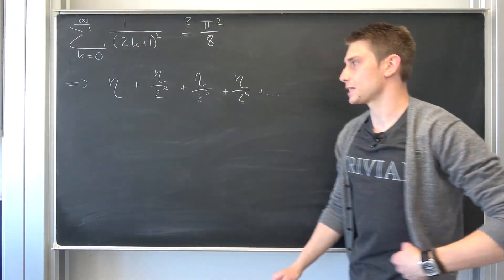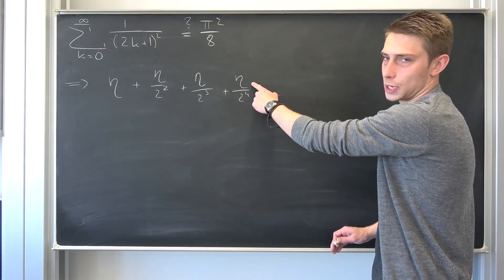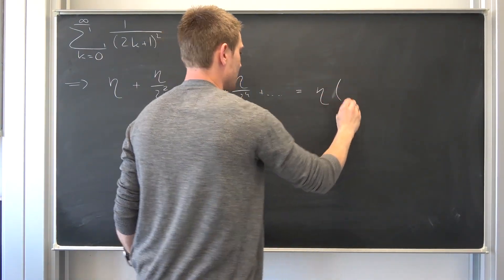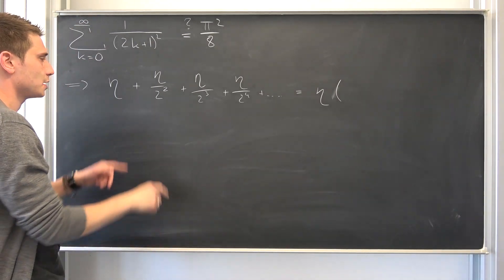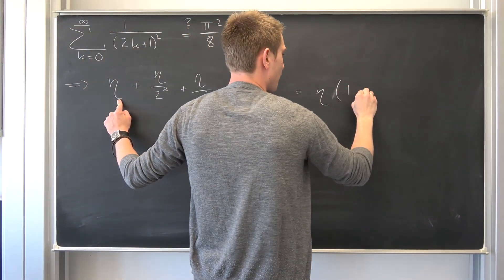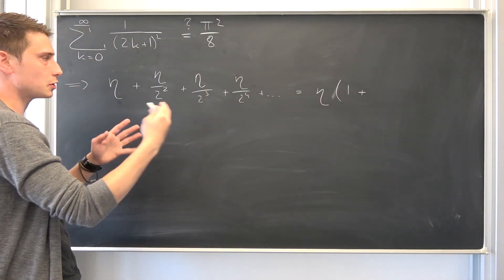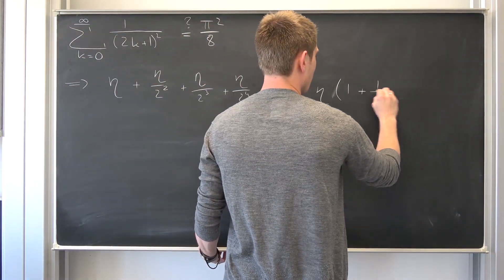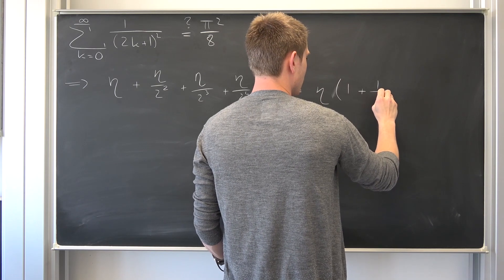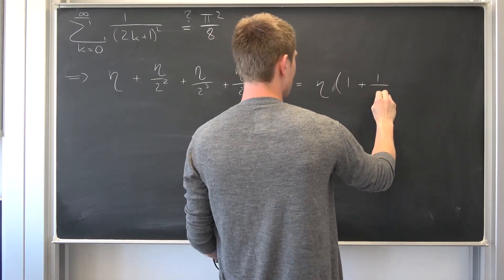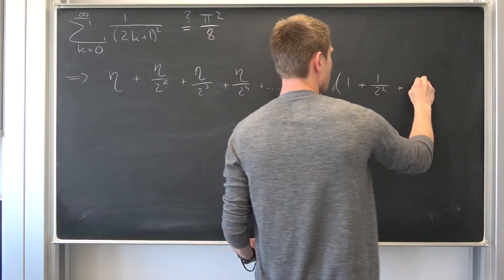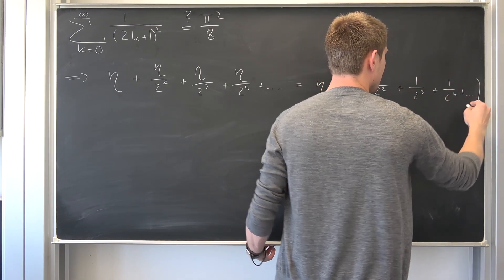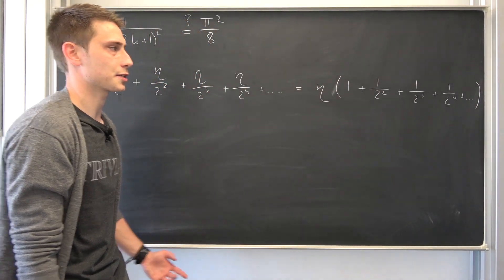You are going to see why this is actually useful. Now I would like to factor out an eta on all those terms. Not eta equals 2, just eta times. What we have here is 1 plus, I'm going to leave a bit of space, no, no I'm not. We are just going to put it here. 1 over 1 plus 1 over 2 squared plus 1 over 2 to the 3rd power plus 1 over 2 to the 4th power plus da da da. I hope you can see where this is going.